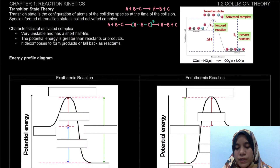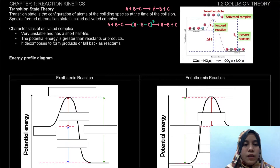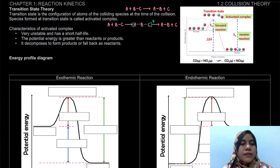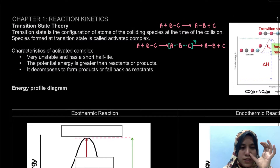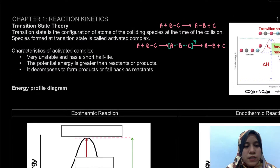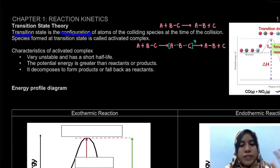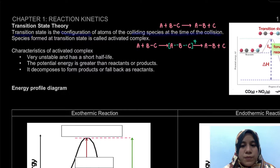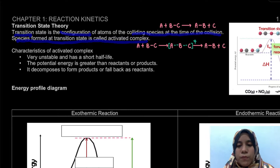Now let's look at transition state theory. Transition state is the configuration or arrangement of atoms of the colliding species at the time of collision. The species formed at this point is called the activated complex. Before our reactant changes to product, it will undergo the transition state.